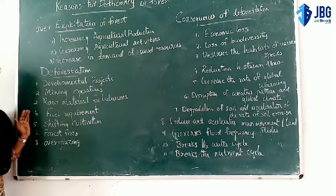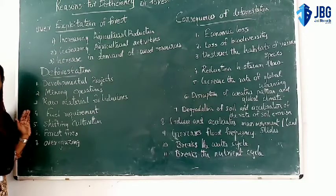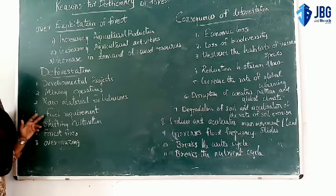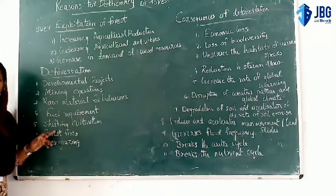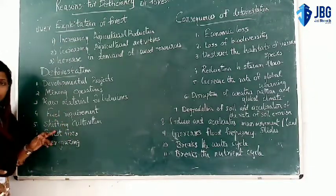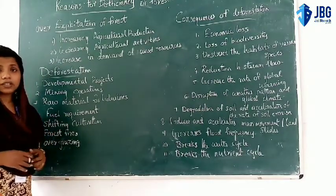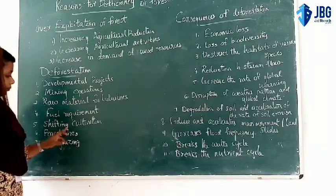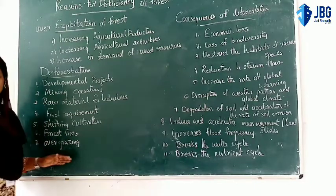To summarize, industries use raw materials — making boxes, paper, and other items. Fuel requirement is another cause. Shifting cultivation replaces natural forest ecosystems with mono-specific tree plantations. Forest fire and over-grazing are also causes. These are all forms of deforestation.